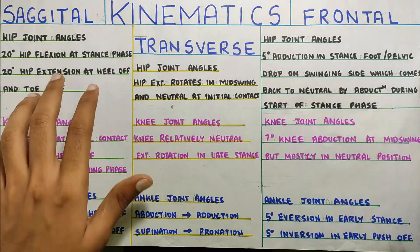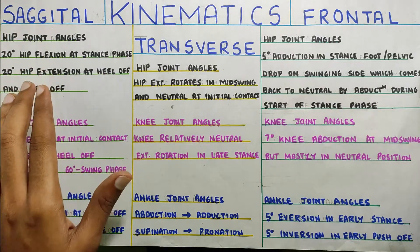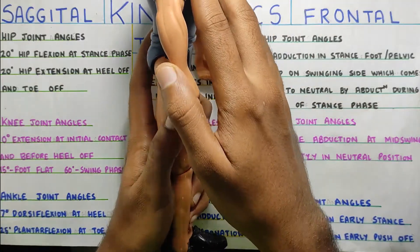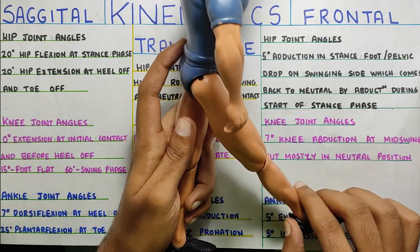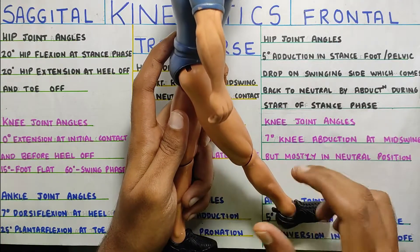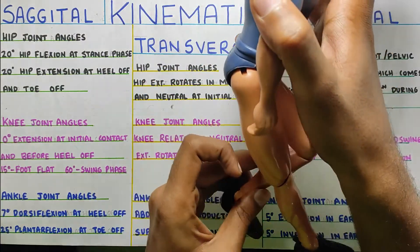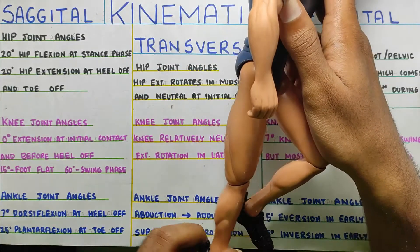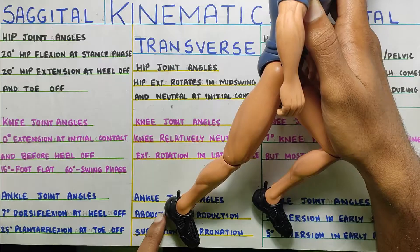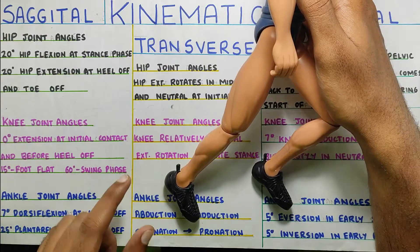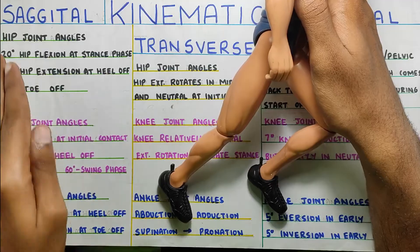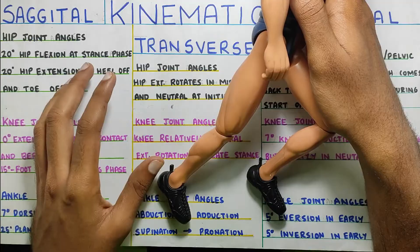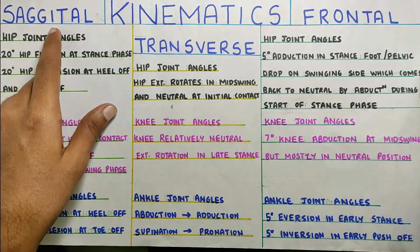Starting with the hip in the sagittal plane: there is 20 degrees of flexion and 20 degrees of extension. The flexion happens at the stance phase — when you are in the stance phase initiation, there is 20 degrees of hip flexion. Then the other leg goes for swing, and your leg goes back into hip extension at the time of heel off. So these are the extremes of range — 20 degrees of hip flexion and 20 degrees of hip extension is the minimum required at the hip joint in the sagittal plane.